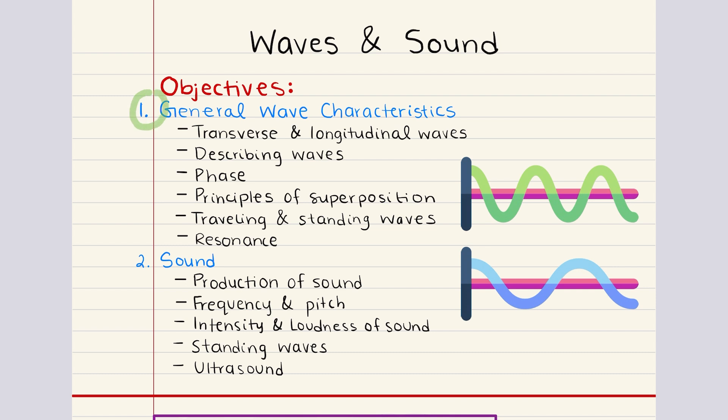In this chapter we're going to cover two main objectives. Our first objective is to explore general wave characteristics. So this section will go over transverse and longitudinal waves, key properties like amplitude, frequency, and phase. We'll also cover the superposition principle and the behavior of traveling and standing waves, and then we're going to end this section with a discussion on resonance and its role in amplifying wave motion.